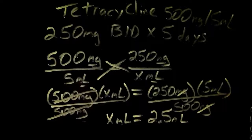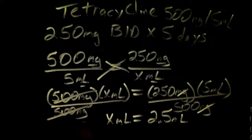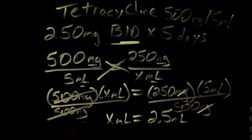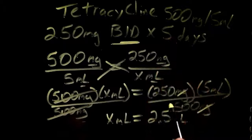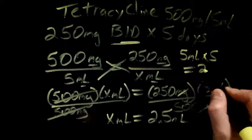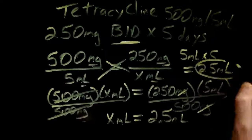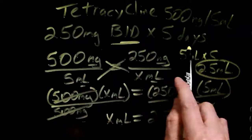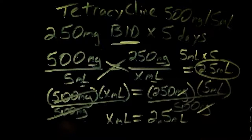That 2.5 mils is per dose, not the total to dispense. It's taken twice a day, so 2.5 times 2 equals 5 milliliters per day. Over five days, 5 milliliters times 5 days equals 25 mils total. The answer is 25 mils dispensed.